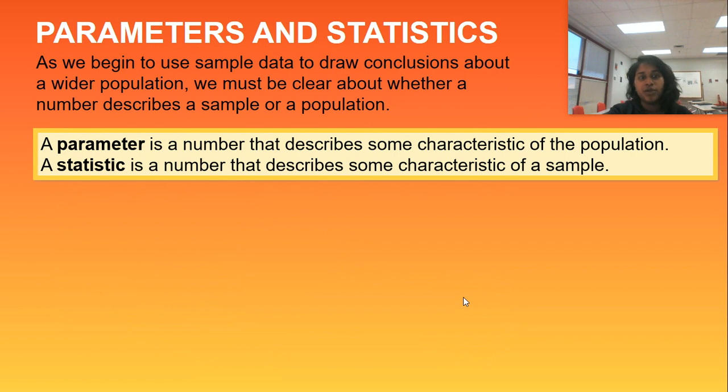First and foremost, in order to understand sample distributions, we have to understand the difference between parameters and statistics. A parameter is a number that describes some characteristic of the population, whereas a statistic is a number that describes some characteristic of the sample.